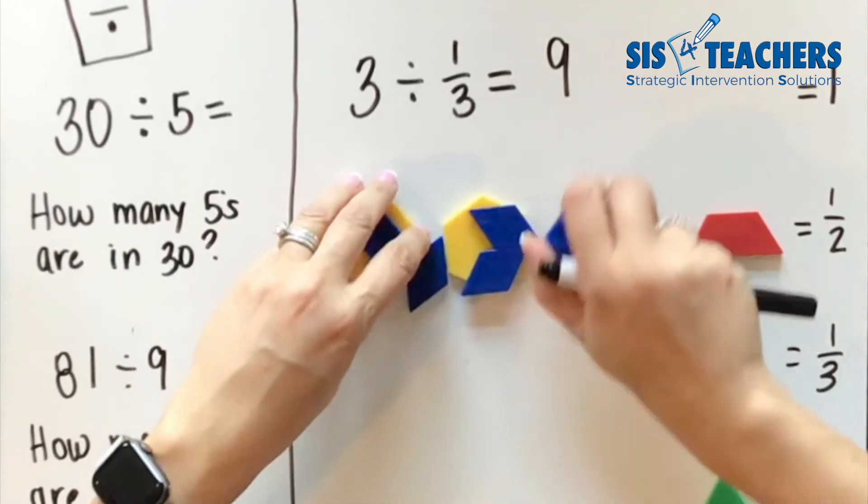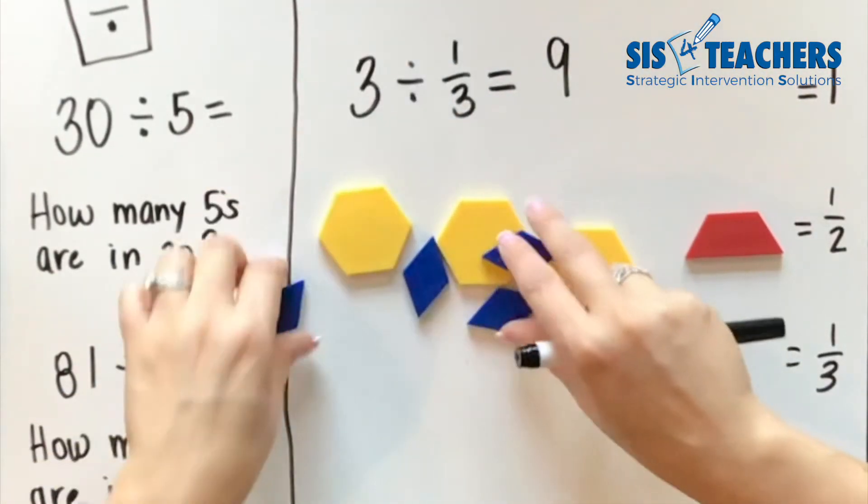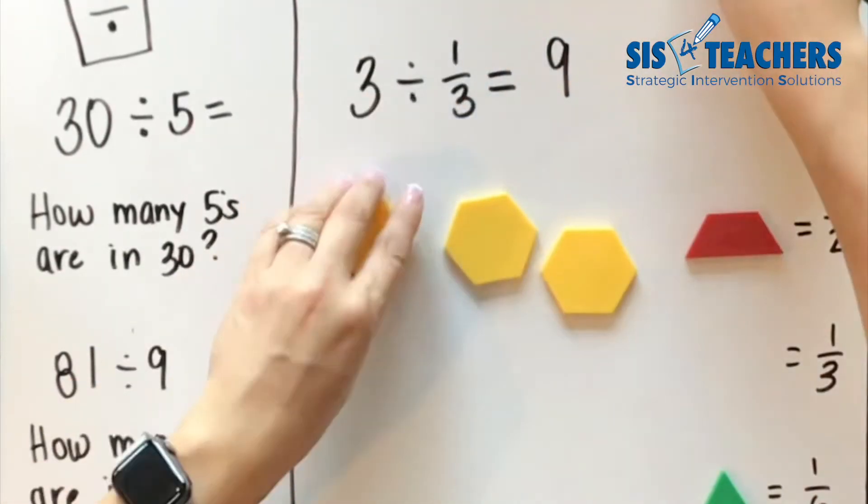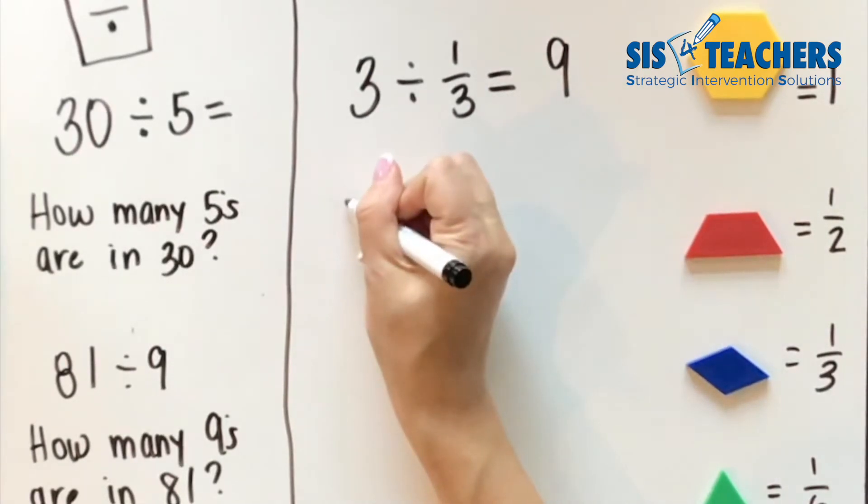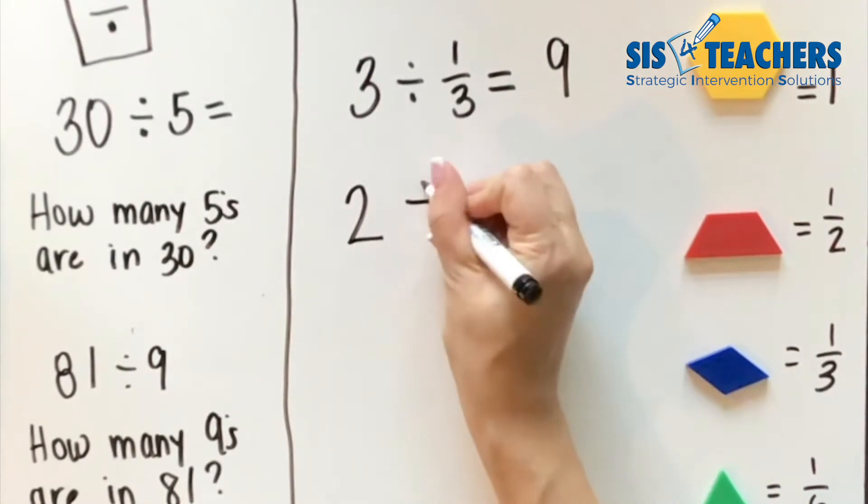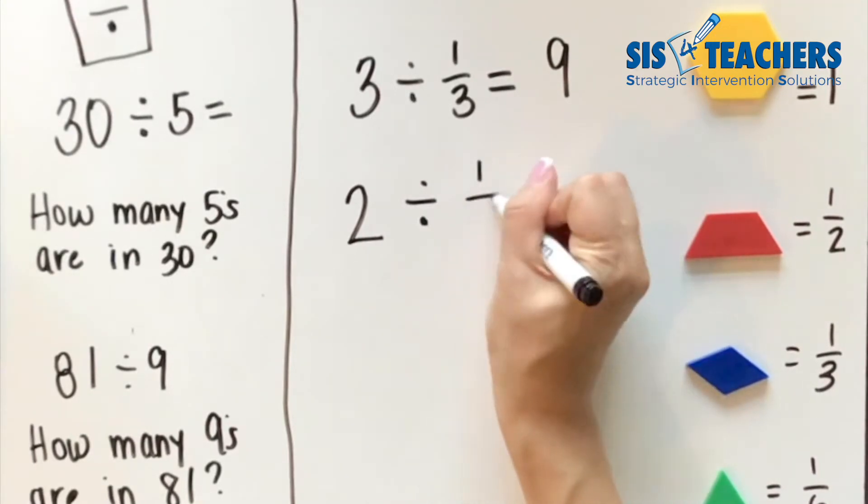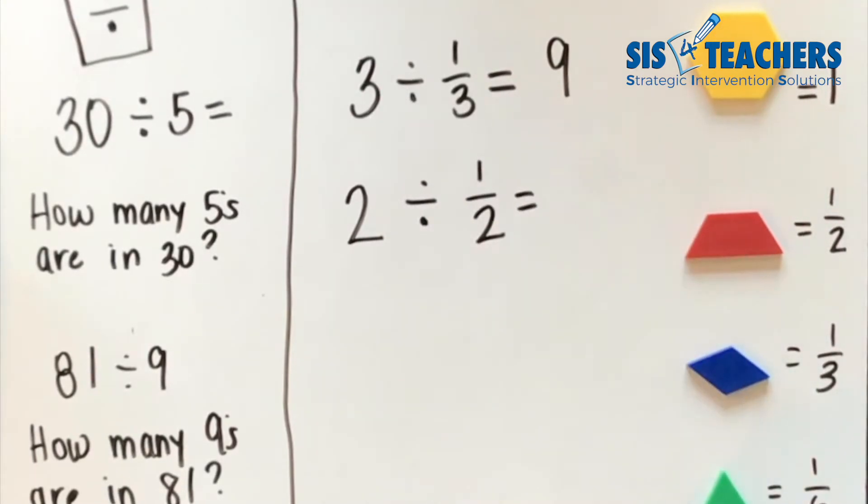Let's take another example to look at this as we might think of it maybe even using something different, different shapes that we might want to use or different parts. Let's say I wanted to know, if I did two divided by one half, that's a little bit simpler for us to think about. But again, I'm going to put out my two because it's asking us how many halves are there in two.